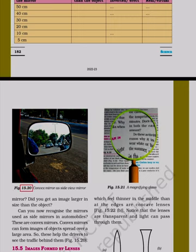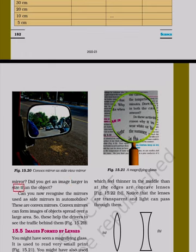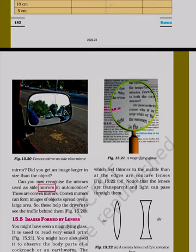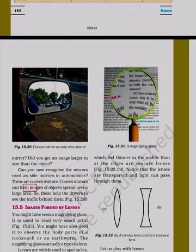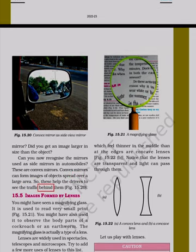Convex mirrors can form images of objects spread over a large area. So, these help the driver to see the traffic behind them. Did you get an image larger in size than the object? Can you now recognize the mirrors used as side mirrors in automobiles? These are convex mirrors.